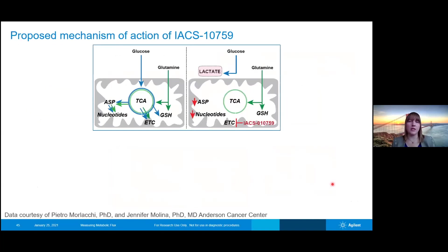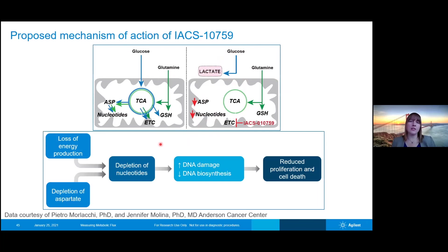The seahorse measurements and LC-MS qualitative flux analysis were really able to zero in on the mechanism of action of this IACS compound. Glycolysis was funneled into lactate and alanine in these cells, glutamine was used to fuel the TCA cycle, and there was this reduction in aspartate and nucleotides. Essentially, the IACS compound is leading to a depletion of nucleotides, which means that as cells encounter DNA damage, there's less ability to recover from this damage and less DNA biosynthesis, causing the reduced proliferation and cell death.